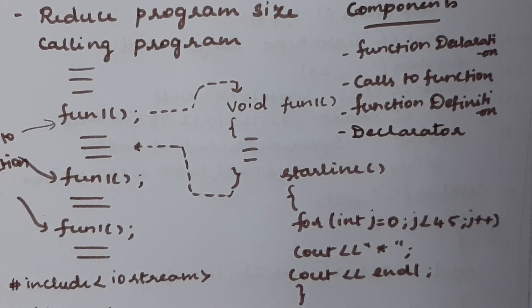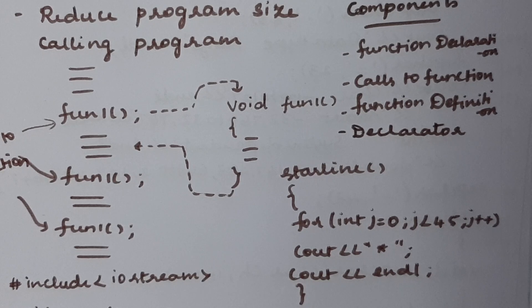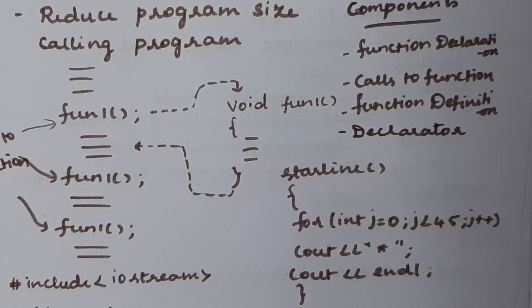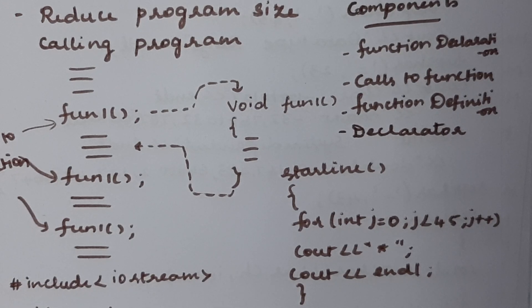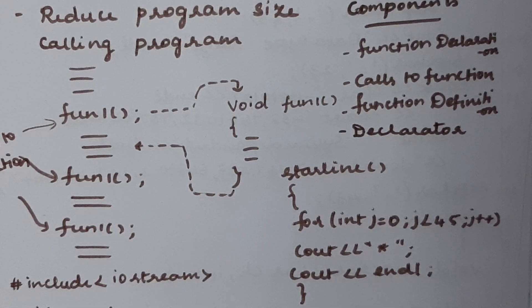Suppose if you are defining the function before the main function — we usually start the program with the main function because execution starts with the main statement, followed by the user-defined function. If you define the user-defined function before the main function, then no declaration statement needs to be included in the program. So let us see one example program for functions.